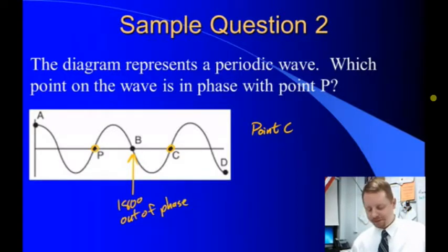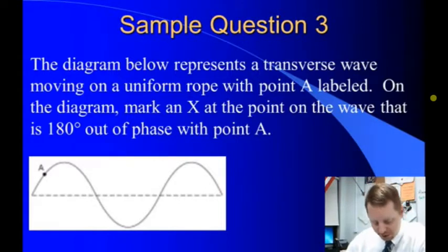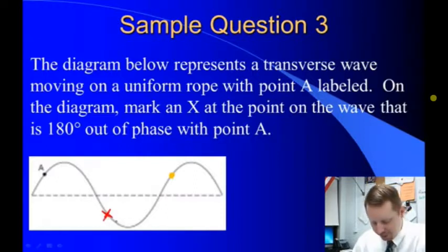Let's take a look at another one. The diagram below represents a transverse wave moving on a uniform rope with point A labeled. On the diagram, mark an X at the point on the wave that is 180 degrees out of phase with point A. Well, let's start. If that's A, it's about halfway up the rise of a wave. Let's find the next point that is in phase. That would be over there. So if I want to find the point that is 180 degrees out of phase, I'm going to go directly between those two. And about halfway in between looks like it'd be right about there. 180 degrees out of phase with point A.